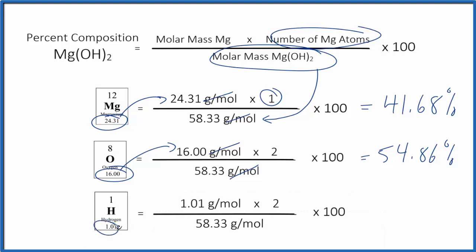So we have 1.01, and we have 2 times the 1, so we have the 2 hydrogens. We multiply, divide by the molar mass for magnesium hydroxide, and then when we multiply it by 100, we get 3.46%. And these numbers here should add up to very close to 100%.